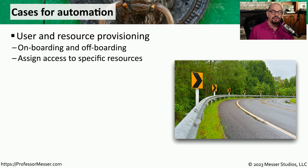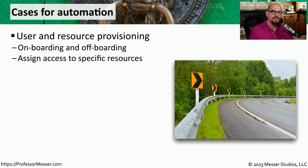Many organizations will automate the process of onboarding and offboarding. When you're onboarding, there are a core set of resources that almost every employee needs access to. For example, they will need their own home directory, they'll need access to a printer that's near them, and they'll need access to email. An onboarding script can automatically create the user's account, assign them to the correct groups, and make sure they have access to the files and resources they need.